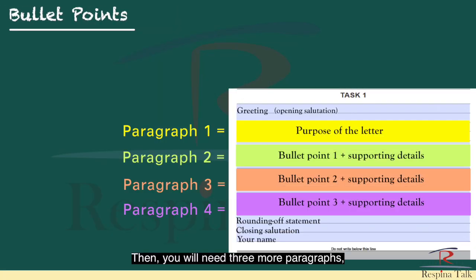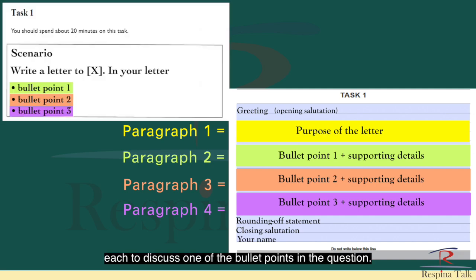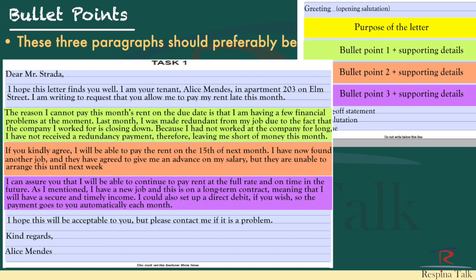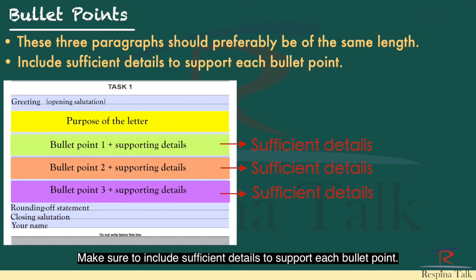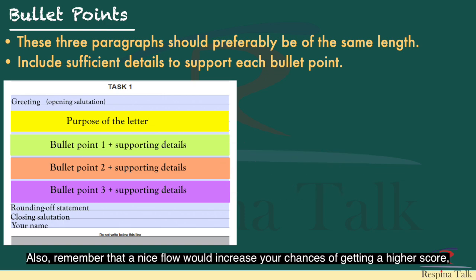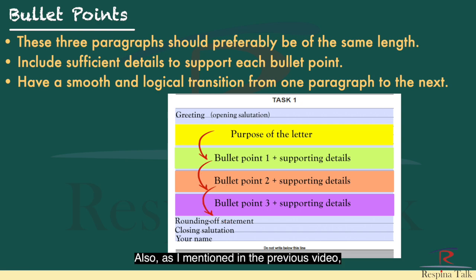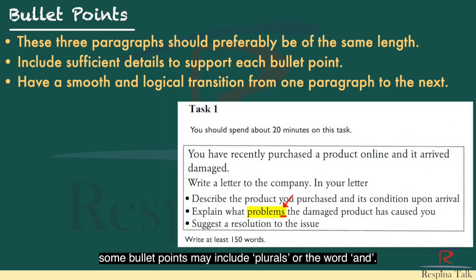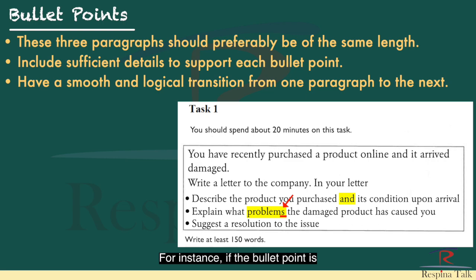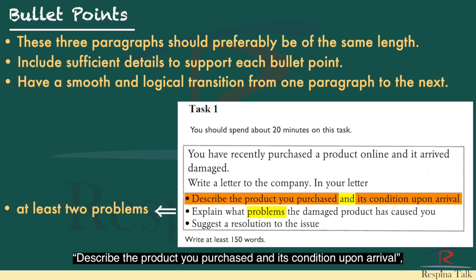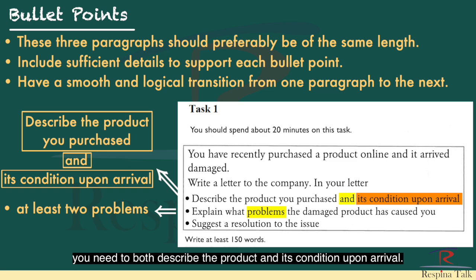Then you will need three more paragraphs, each to discuss one of the bullet points in the question. Keep in mind that these three paragraphs should preferably be of the same length. Make sure to include sufficient details to support each bullet point, and ensure there is a smooth and logical transition from one paragraph to the next. Some bullet points may include plurals or the word 'and' — in this case, fully address all parts. For instance, if the bullet point is 'explain what problems the damaged product has caused you,' you must explain at least two problems.